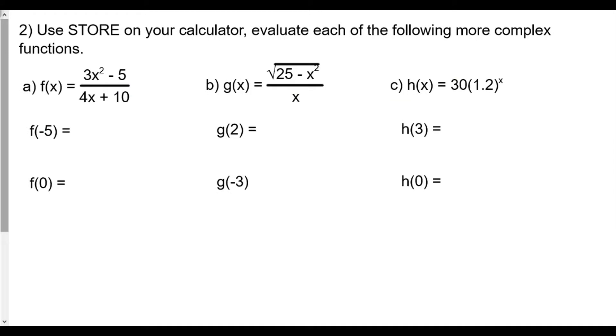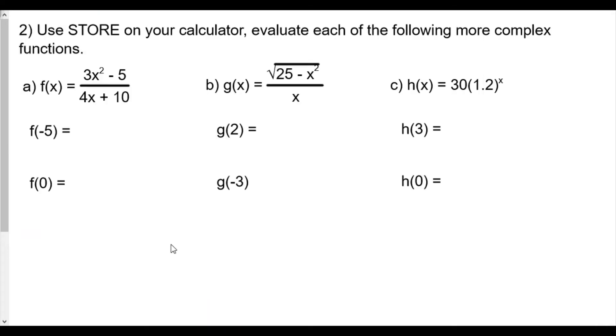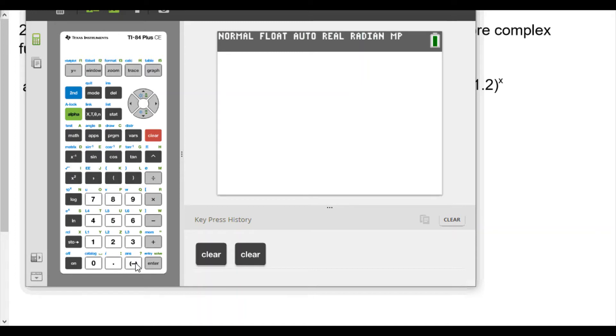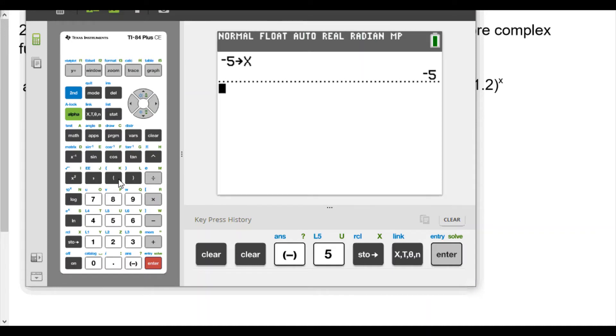Now it says here use STORE on your calculator to evaluate each of the following more complex functions. I'm going to grab my calculator. For us to use STORE on the calculator, first we're going to try a, which is negative 5, and we're going to type in 3x squared minus 5 over 4x plus 10. Type in negative 5, remember negative is on the bottom right next to the enter button. Negative 5, hit STORE, and I'm plugging for x, enter. The expression we believe was 3x squared minus 5 over 4x plus 10.